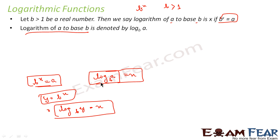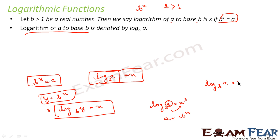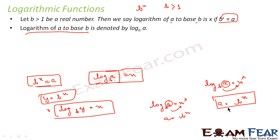Generally, b^x = a means log of a to the base b equals x. To remember this: if you see log a to the base b = x, take 'a' on one side, put b here, and put x a little up — so a = b^x. That's the memory trick.